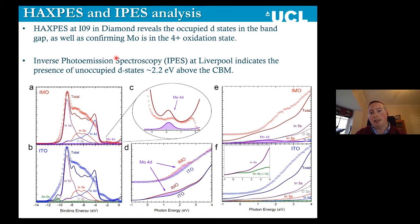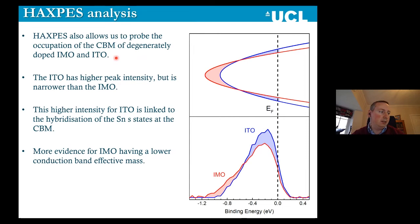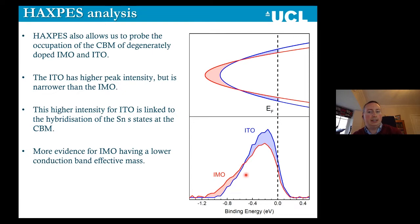We had spectroscopic evidence that our calculations were giving us the right answer. What hard XPS allows you to do — it's XPS with a much stronger photon energy — is look much more closely at the occupation at the bottom of the conduction band. From our spectra, the ITO peak had higher intensity but was narrower than the molybdenum-doped indium oxide. The density of states, which this effectively is, is simply an integration of a band structure. The higher intensity of ITO is linked to a less dispersed conduction band minimum, whereas the broader peak for IMO is indicative of a higher curvature.